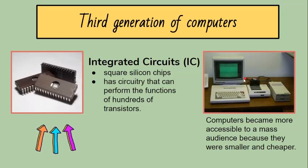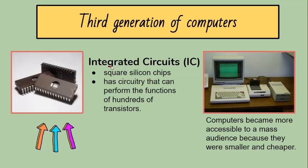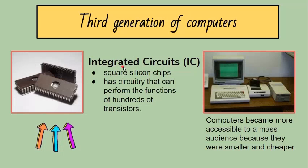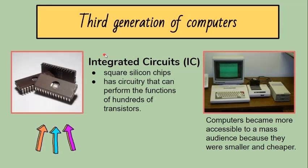Computers for the first time became more accessible to a mass audience because they were smaller and cheaper. Some advantages are that ICs are very small in size, and there was evident improvement in performance. Unlike vacuum tubes, silicon will not break down easily.